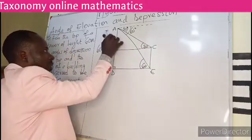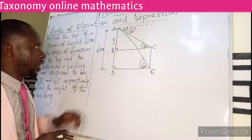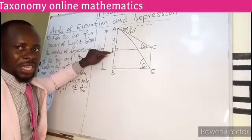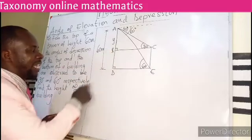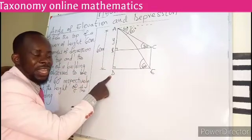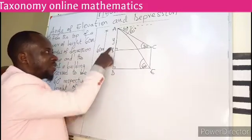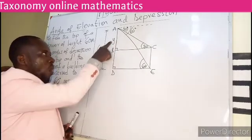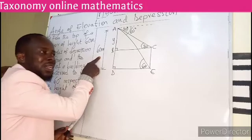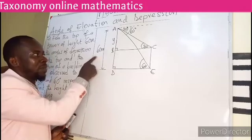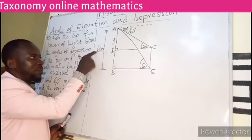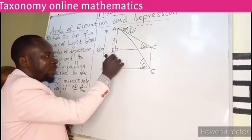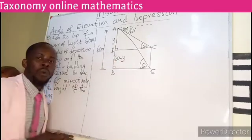I am going to say that let AB equal to Y, meaning the distance AB equals Y. Then the distance BD is going to be something added to Y to give 60. If I add a value to Y, I must get 60. So if I subtract Y from 60, I get the remaining part. It means BD will be 60 minus Y.